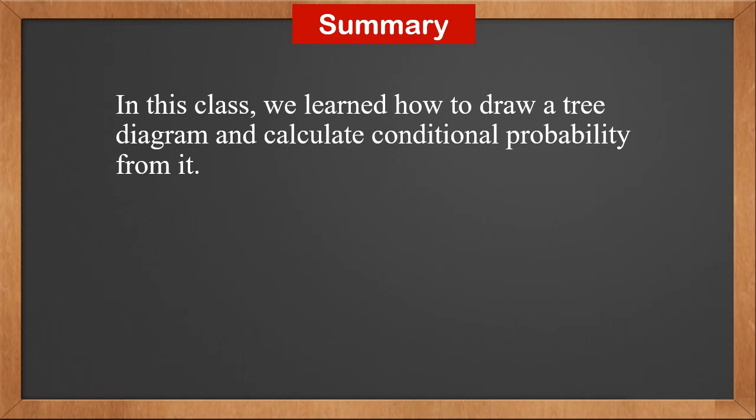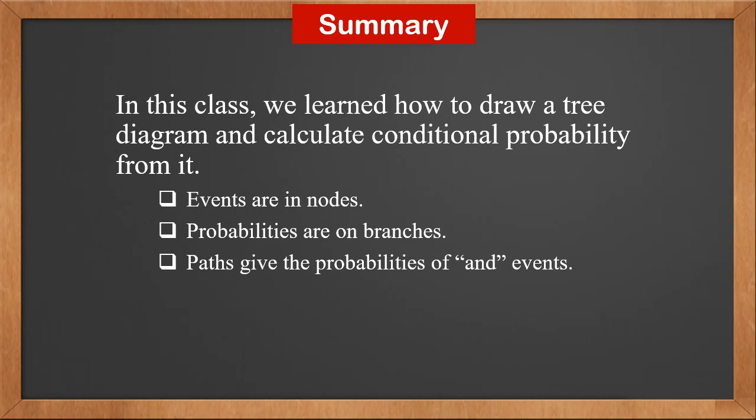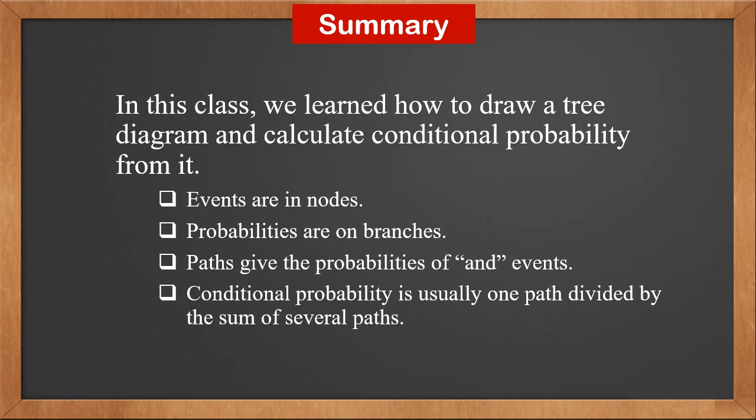In this class, we learned how to draw a tree diagram and calculate conditional probability from it. Events are in nodes, probabilities are on branches. Paths give the probabilities of joint events. Conditional probability is usually one path divided by the sum of several paths.